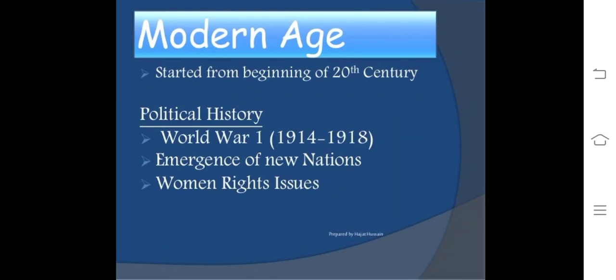Hello friends, in this video we are going to discuss the Modern Age, mainly the poetry of Modern Age. Modern Age started from the 20th century. Political history includes World War I which started in 1914 and 1918, emergence of new nations, and women's rights issues. These are certain factors which dominated the thinking of Modern Age poetry.